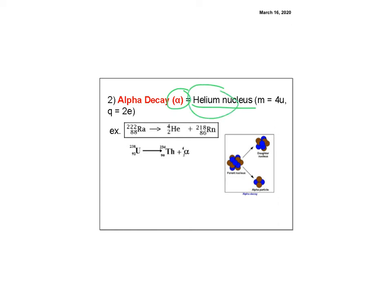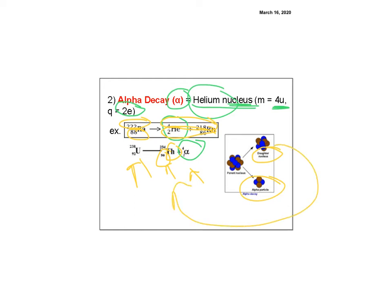Alpha decay involves emitting a helium nucleus, written as helium-4 or alpha-4-2. It has a mass of 4 u and a charge of +2. Conservation of charge and mass must hold: in the example, 86 plus 2 equals 88 and 218 plus 4 equals 222. For uranium-238 emitting an alpha: 238 minus 4 gives mass 234, and 92 minus 2 gives atomic number 90, which is thorium. The remaining atom is called the daughter nucleus.